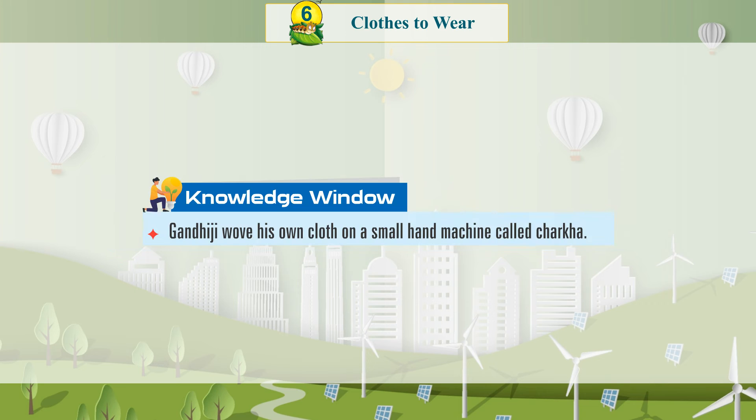Knowledge Window: Gandhiji wove his own clothes on a small hand machine called Charkha.